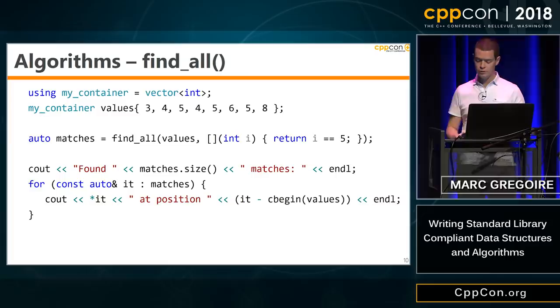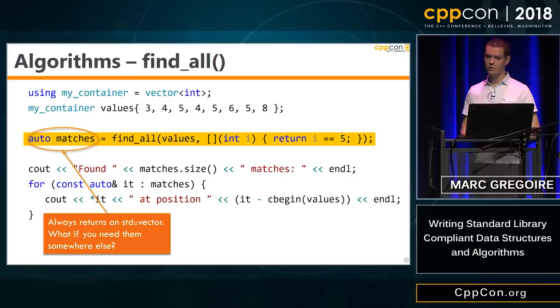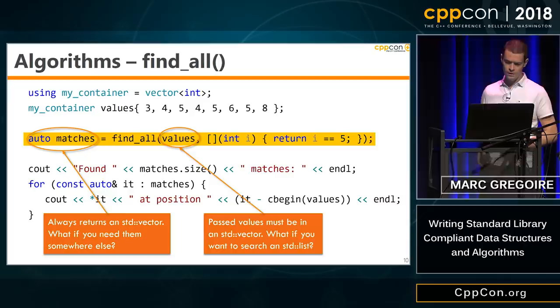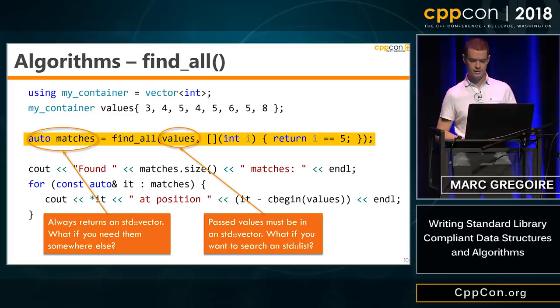Easy to use, but there are a couple of problems. The first problem is it always returns a std::vector, so what if I want my matches somewhere else? And it always requires a vector of values — so it's templated on the element type, meaning I can have a vector of ints or strings, but it has to be a vector. What if I want to search a list? That's not possible.